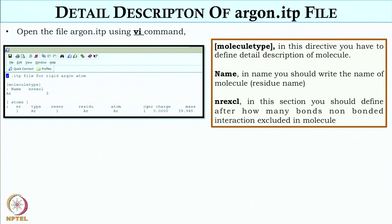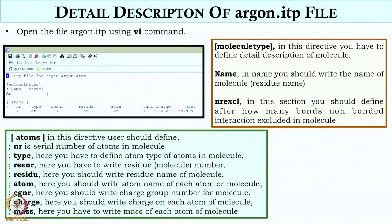Then there is NREXL. In this section, we have to define after how many bonds the non-bonded interactions are included in the molecule. Since this is a monoatomic molecule, it does not matter. But in the case of water, methanol, or ethanol, it has to be chosen properly. For argon, instead of 3 you could give 2 or 4 — it does not matter because every pair is interacting.